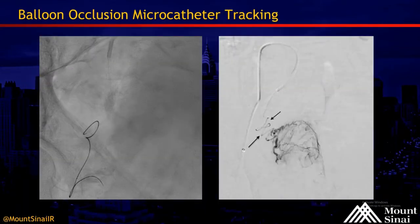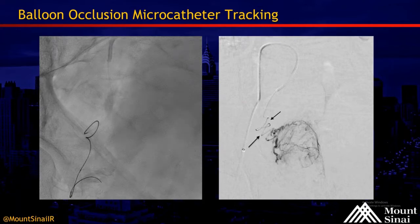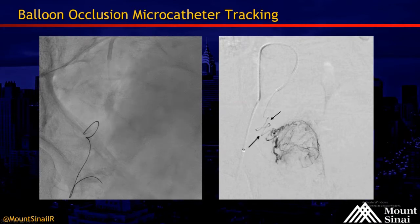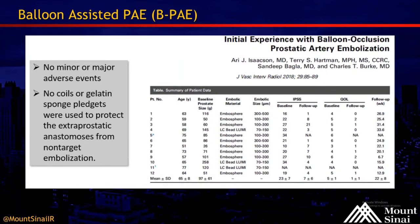This next slide shows microcatheter tracking. This is the balloon occlusion microcatheter tracking via a fathom wire. A lot of people have concerns about the bulkiness of this catheter, but you can see in the image on the right and movie on the left that the microcatheter can be advanced very distally into the prostatic circulation, even over a wire with a long floppy tip. You can see very clearly a very tortuous anatomy with the catheter tracking very distally, which is really important as we discuss dealing with collaterals, coil embolization, and distal embolization.